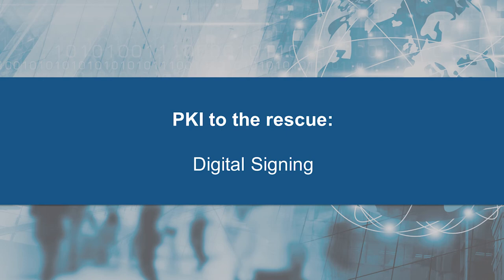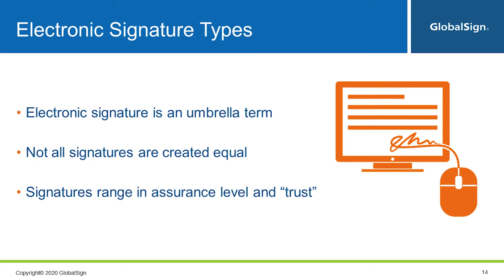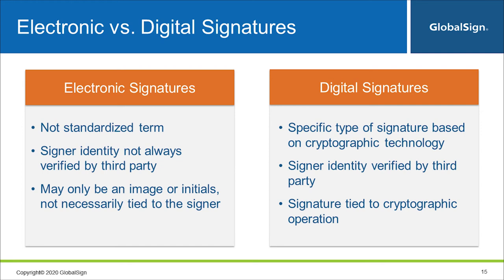The use case I want to zoom in on is digital signing. Especially these days with everyone working from home, this becomes more and more relevant. A lot of people don't have printers at home, which means the old process of printing, signing, scanning, and sending is not easy to achieve at home, and a lot of companies are looking for alternative solutions. These alternative solutions can be electronic signatures. I'll cover a bit of terminology to make sure everyone understands what an electronic signature is and how it compares to a digital signature — because electronic signatures are kind of an umbrella term with different levels of trust.